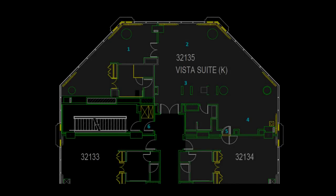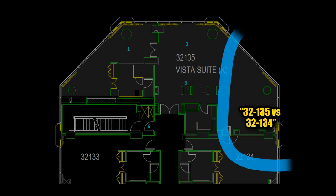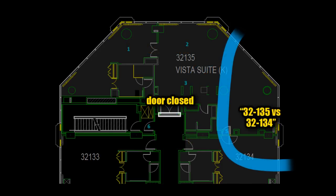Now a visual clarification of the wind and draft problem. We're dealing with two separate air exchanges: 135 versus the hotel, with the 135 door open; and a separate exchange, 135 versus 134, with both windows broken and both doors closed. How the tablecloth on the food cart behaves with the 135 door open illustrates only the 135-versus-hotel case. It tells us nothing about the separate 135 versus 134 case with both doors closed, which was the situation during the shooting.